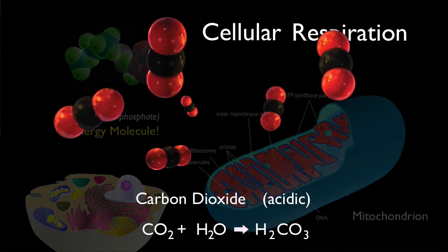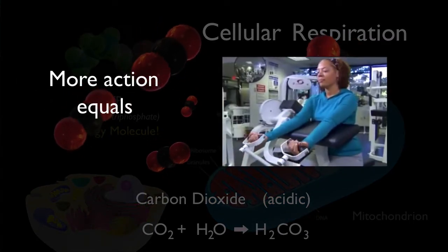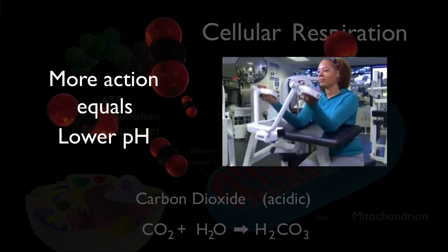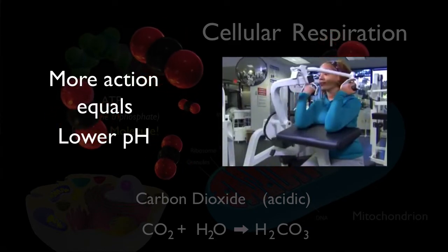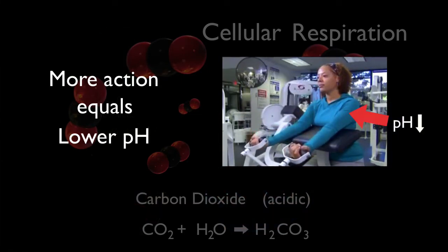So highly active areas of the body where there's a lot of cellular respiration are also areas where the pH is dropping. So now, how do you suppose a hemoglobin molecule feels about a drop in pH?